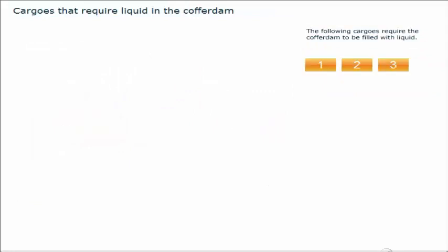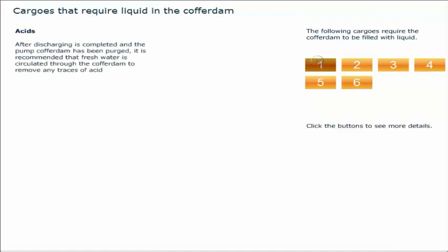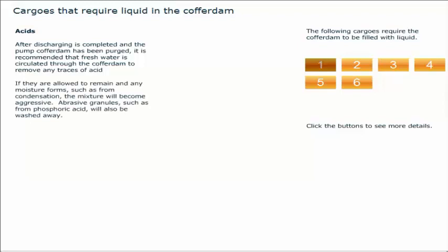The following cargos require the cofferdam to be filled with liquid. After discharging is completed and the pump cofferdam has been purged, it is recommended that fresh water is circulated through the cofferdam to remove any traces of acid. If they are allowed to remain and any moisture forms, such as from condensation, the mixture will become aggressive. Abrasive granules, such as from phosphoric acid, will also be washed away.